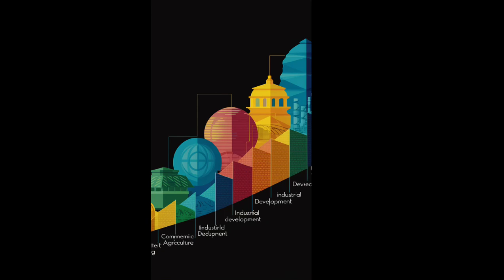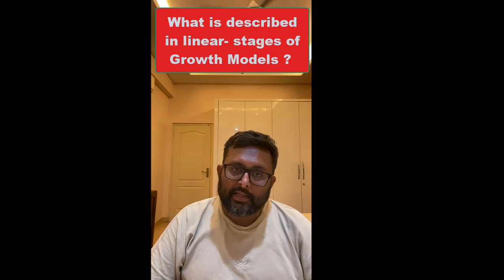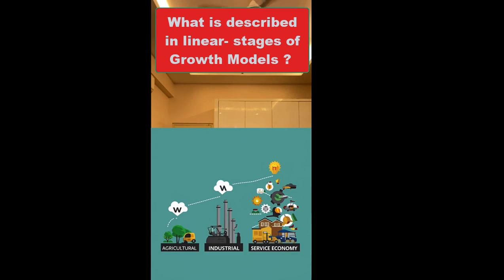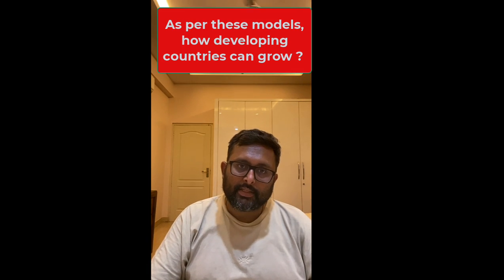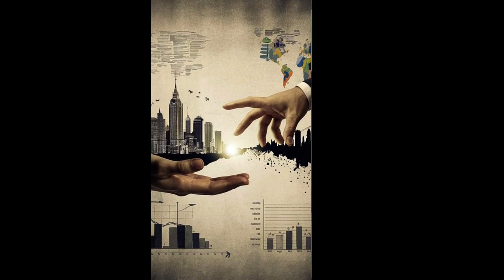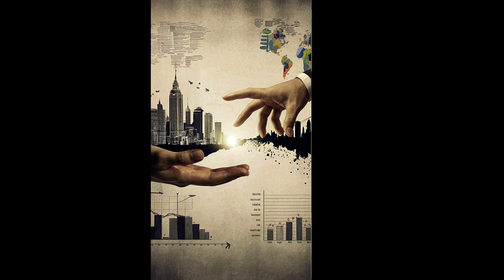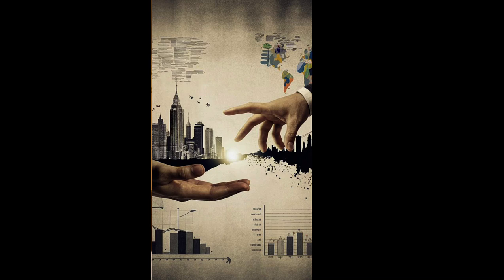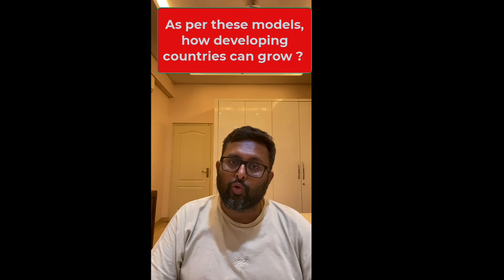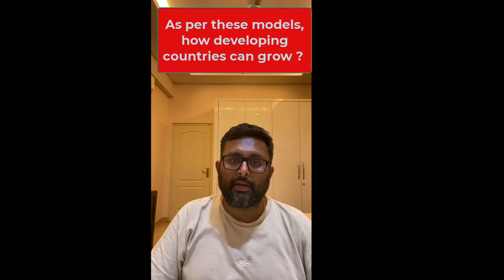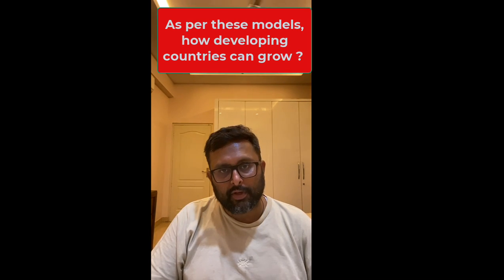Rostow's stages of economic growth. This model comes under linear stages of growth model. In these models, development is seen as a series of successive stages of growth. These models say if there is the right amount of savings, right amount of investment, and right amount of production in the developing economies, then these developing economies can also grow along the same development path which developed countries took.